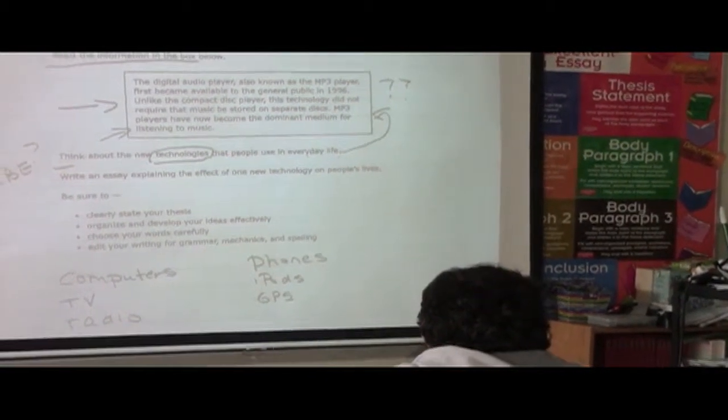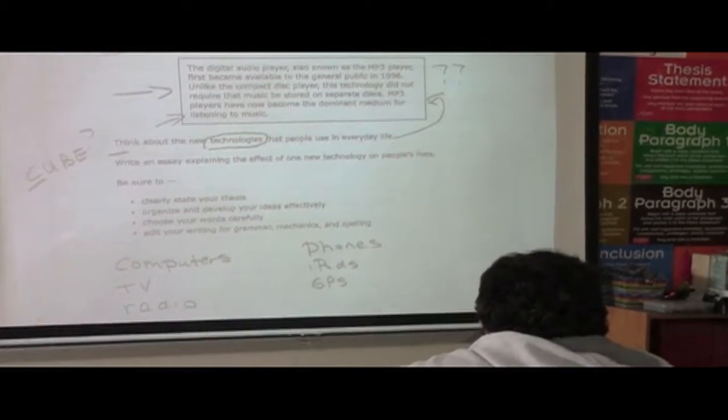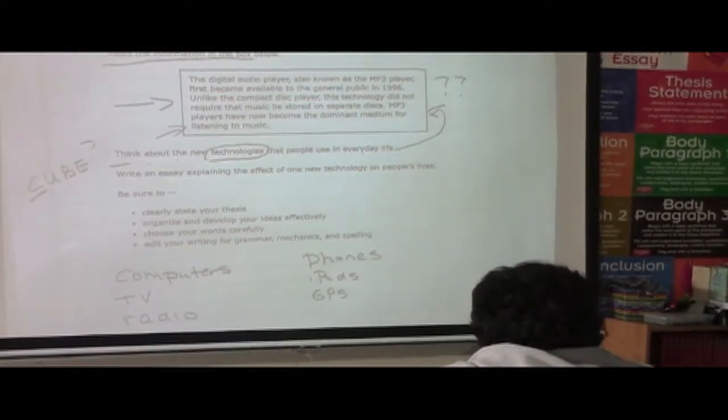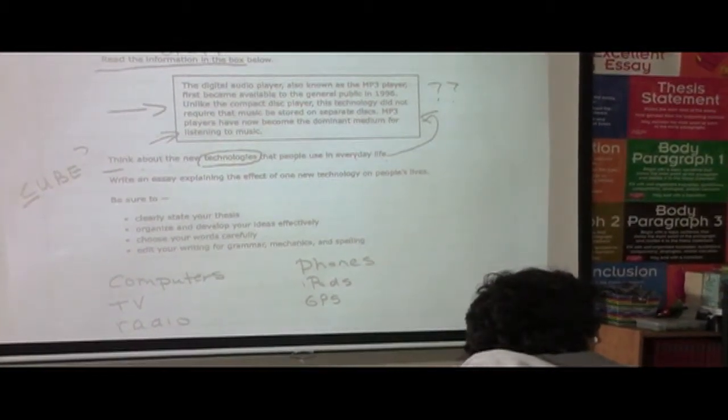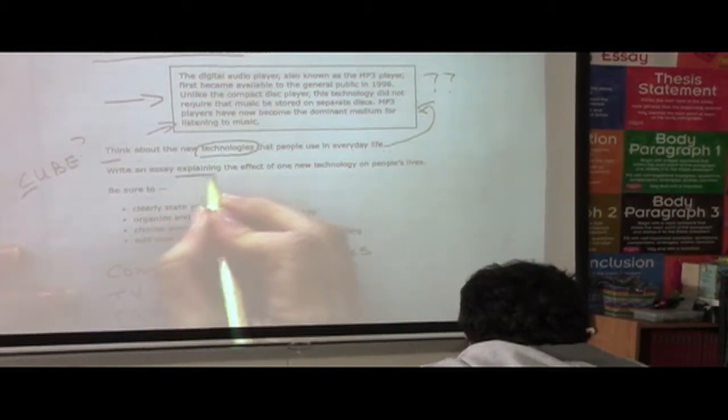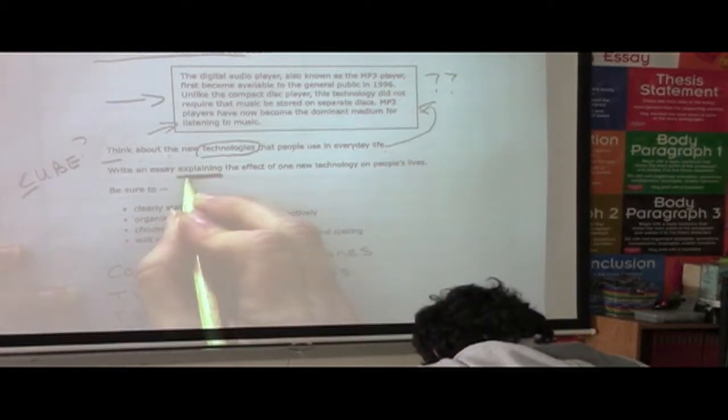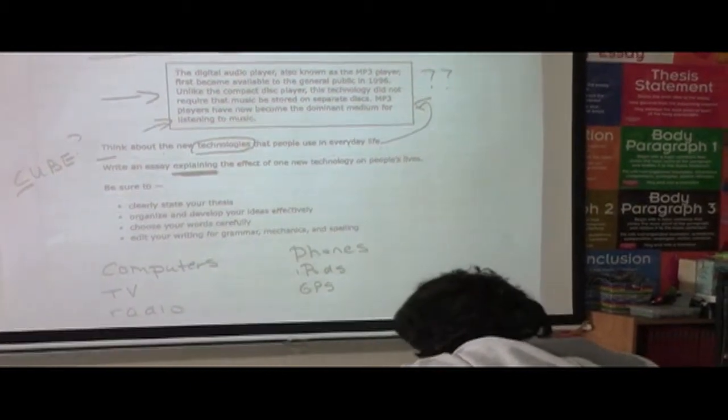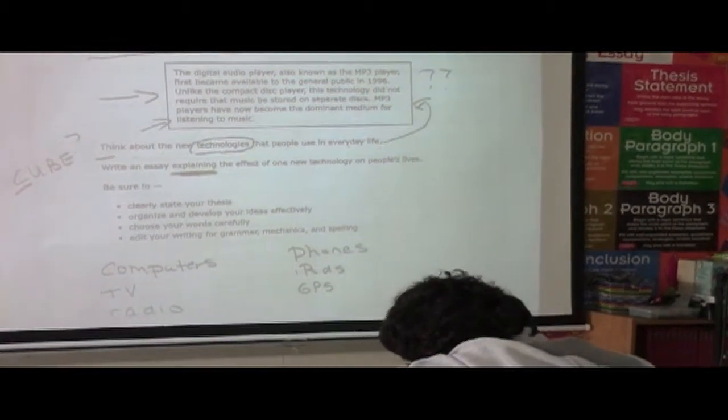Are there words in that prompt that you don't know what they mean, that we need to look up? No. Okay. So we're going to go on to the U. U means we're going to underline what the prompt is asking us to do. The task. Explain. So we're going to underline explain. We already talked about expository, always, now and forever. Explain.